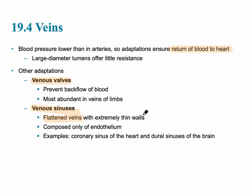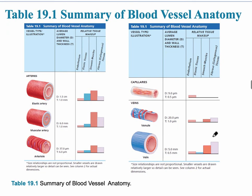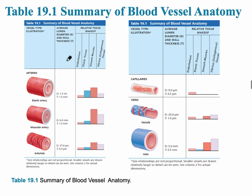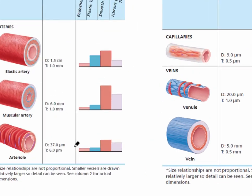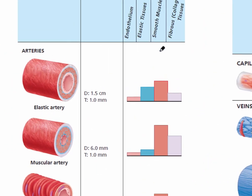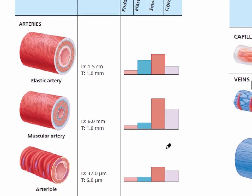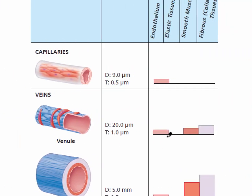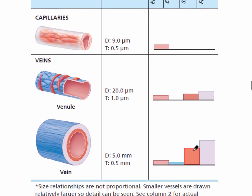One example of a venous sinus is the coronary sinus on the posterior side of the heart; others include the dural sinuses of the brain. Revisiting the comparison chart, arteries have a high amount of smooth muscle while veins have very little. The tunica media is very thin in the veins compared to the arteries.